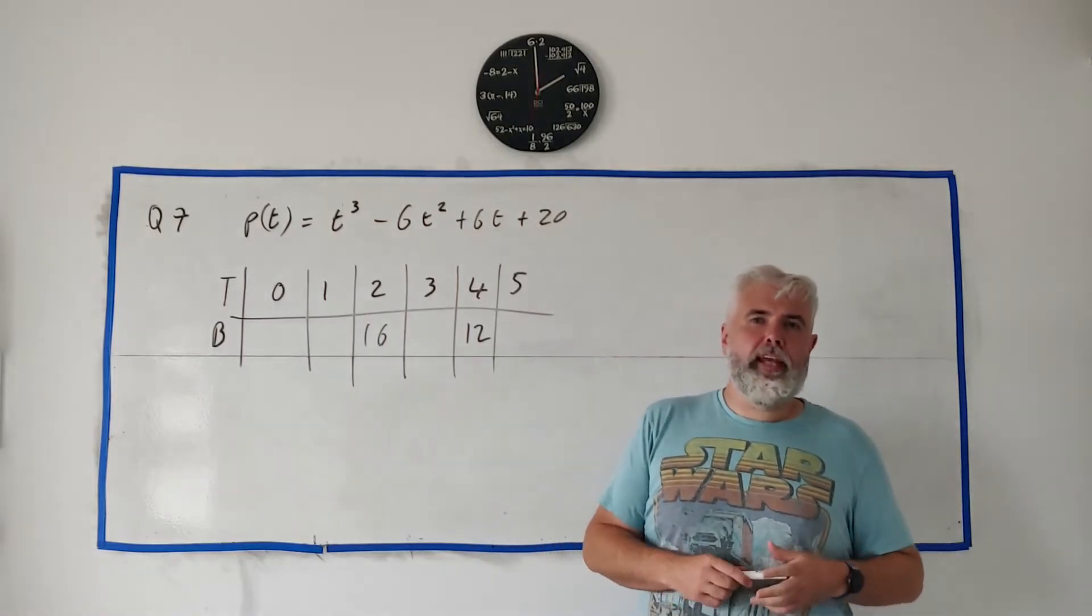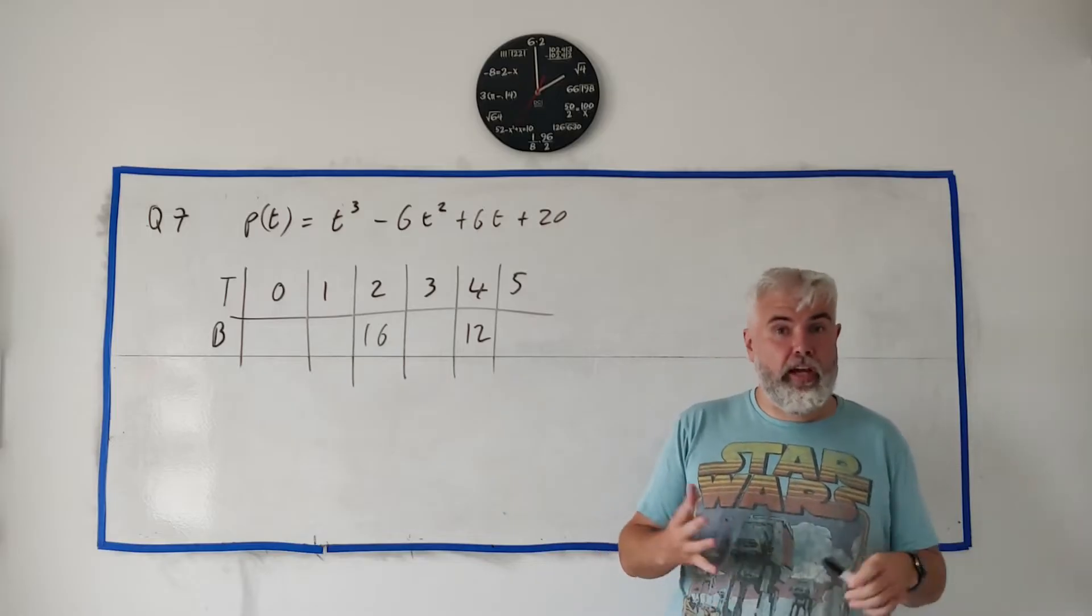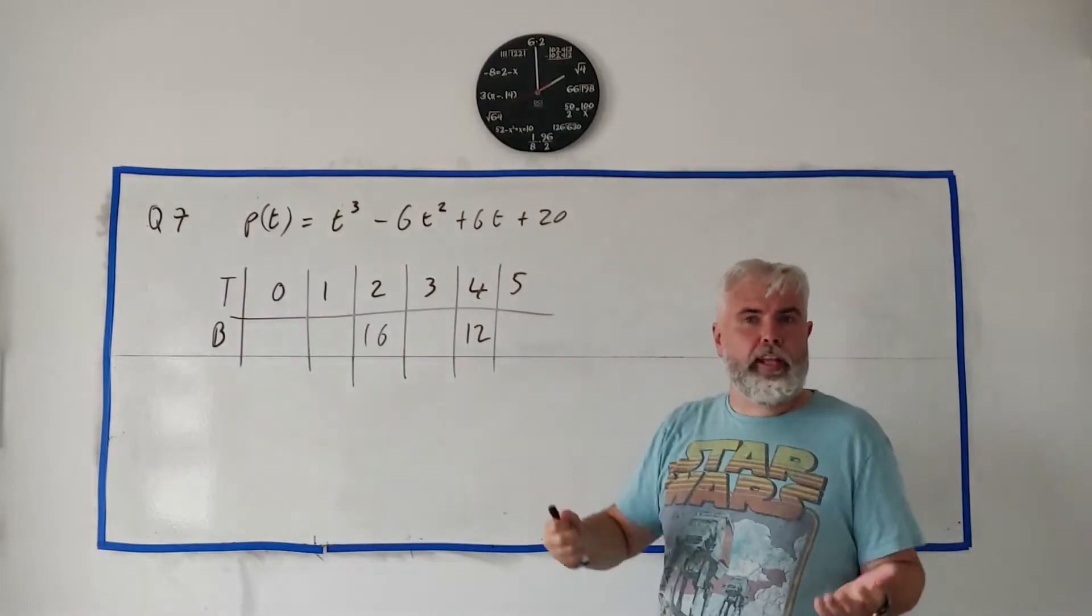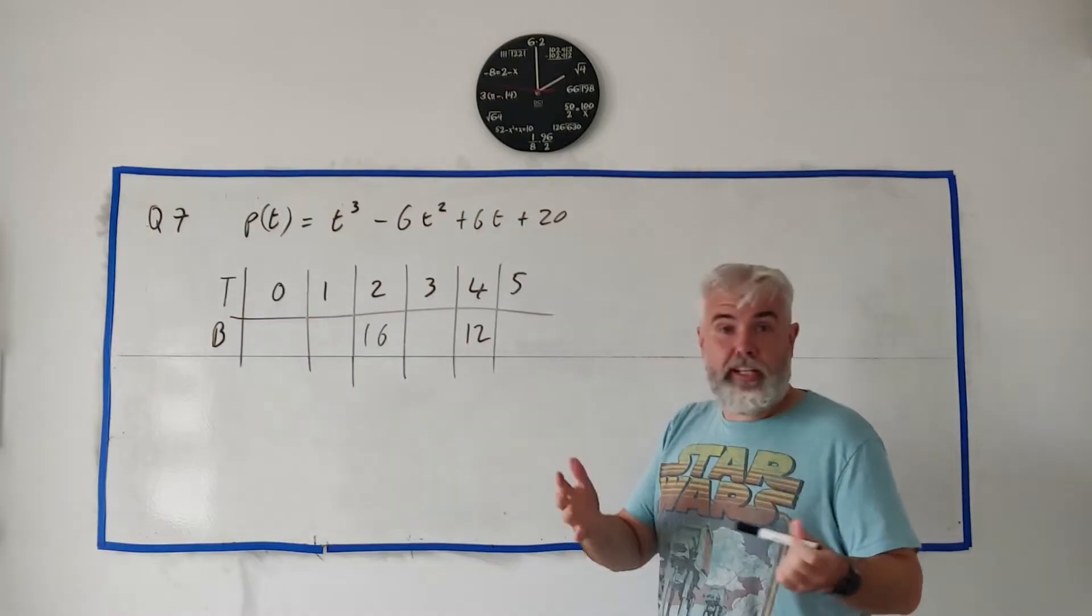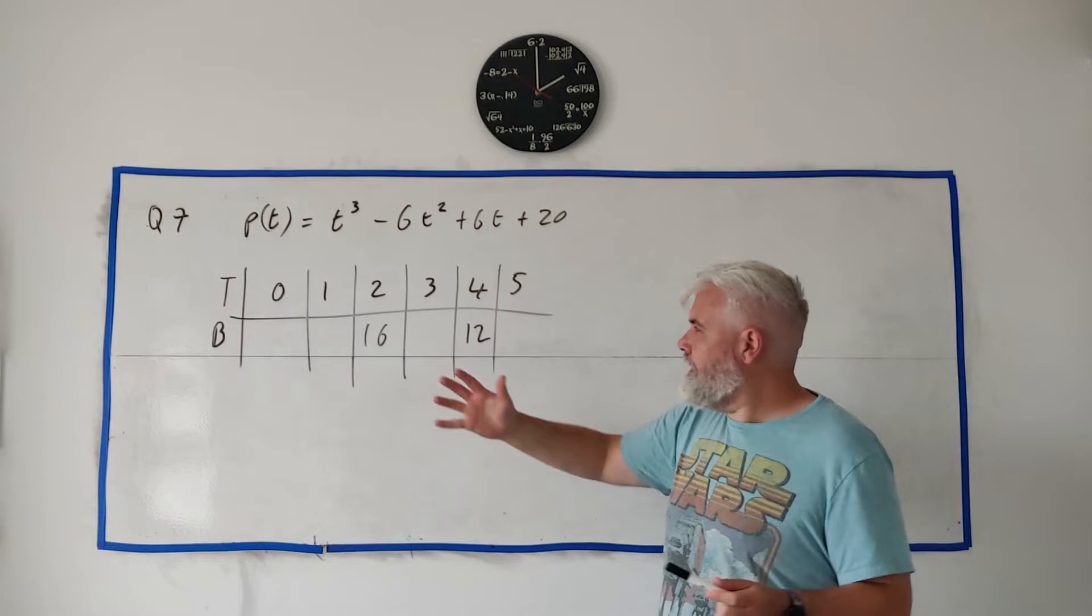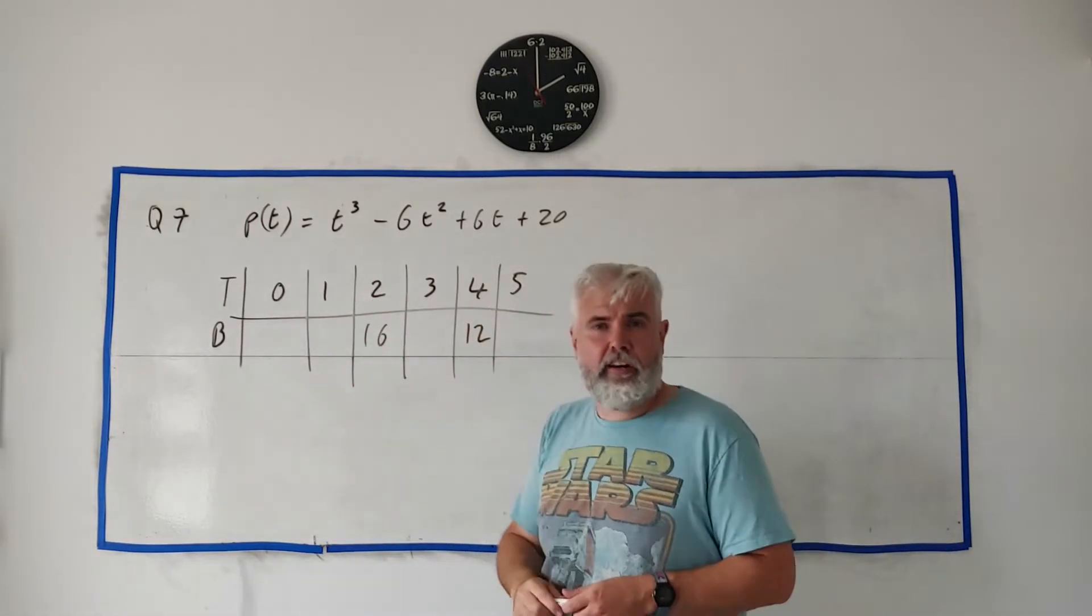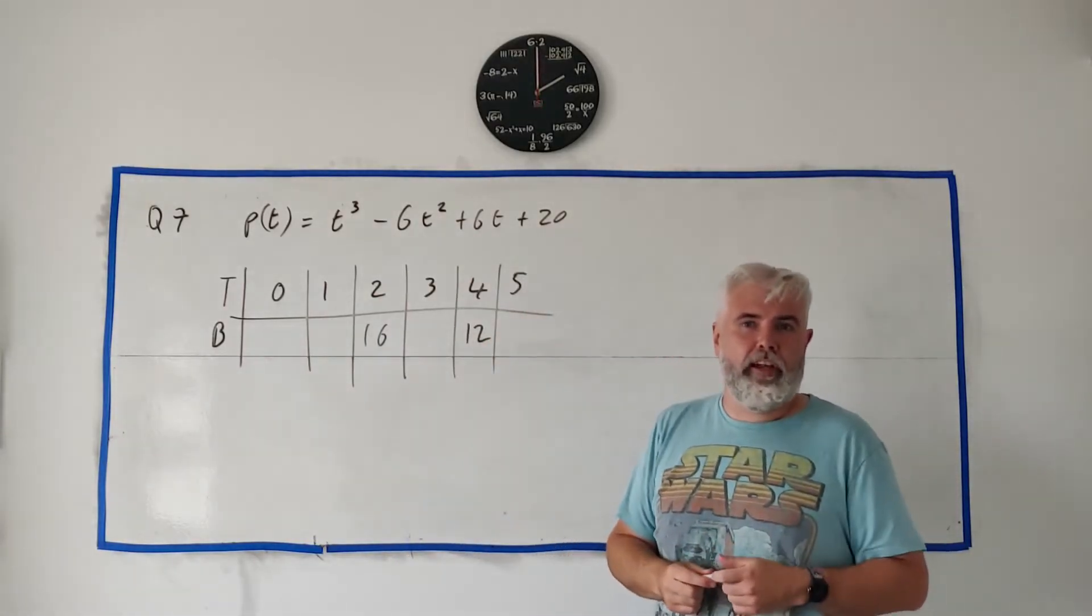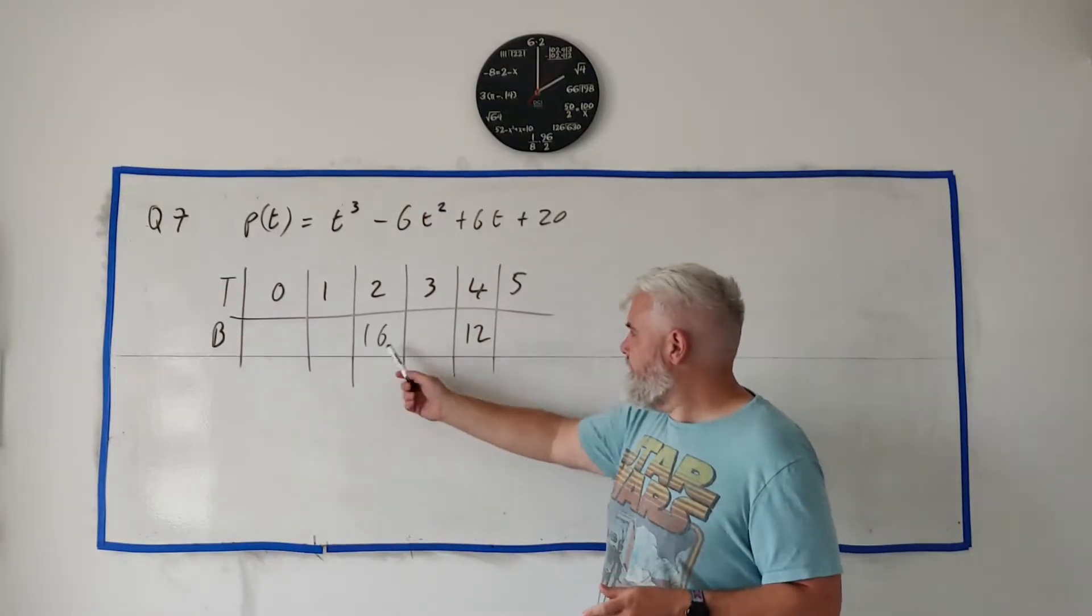In question 7 they tell us about an experiment where we're measuring how many bacteria are somewhere, and they tell us this equation here, p(t) = t³ - 6t² + 6t + 20, roughly models it. Using this model they'd like you to fill in this table here: time t from 0 to 5 hours, and B is the number of bacteria in thousands. They've already done a couple for us: 16 and 12.